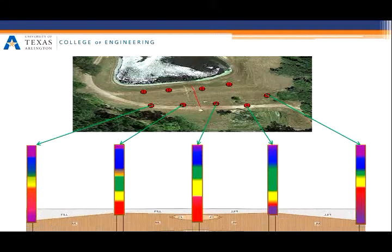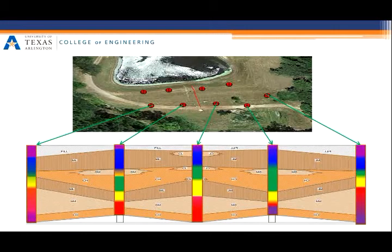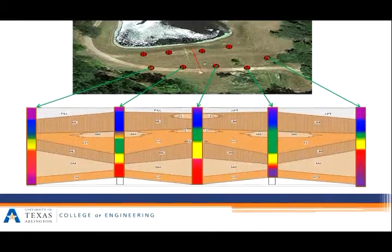Engineers use linear interpolation and create fence diagrams to understand the soil stratigraphy. Improved interpolation of the subsurface is possible using geostatistical methods.